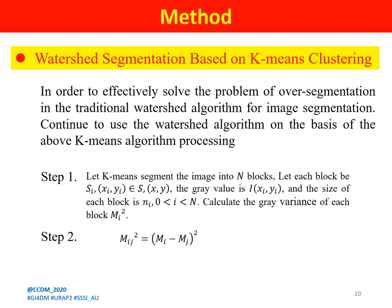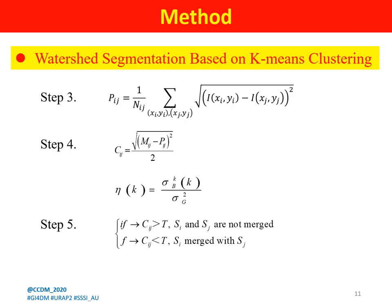Watershed segmentation based on K-means clustering. Step 1: suppose the image is divided into N blocks after K-means segmentation. Step 2: define the gray variance of two adjacent blocks. Step 3: define the mean value of standard deviation of gray values of four neighborhood pixels on the edge of a segmentation block. Step 4: define the similarity between two adjacent class blocks. Set a threshold value T initially to maximize the variance between classes. Step 5: use T to iterate through the adjacent divided blocks.